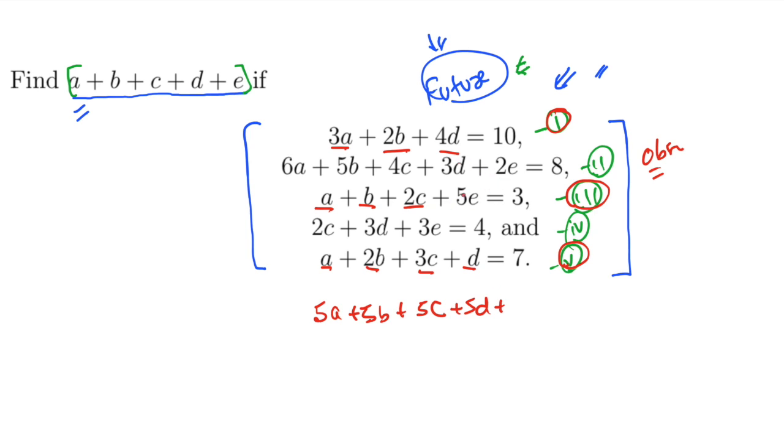Plus we have E, 5E. The total sum is nothing but 10 plus 3 plus 7 is 20. Since 5A plus 5B plus 5C plus 5D plus 5E is 20, so A plus B plus C plus D plus E is nothing but 4. And the answer.